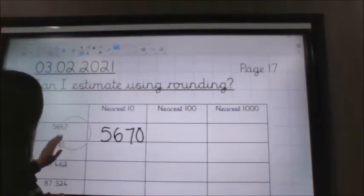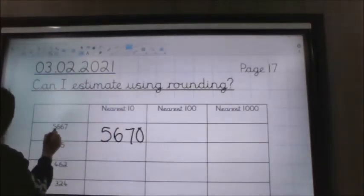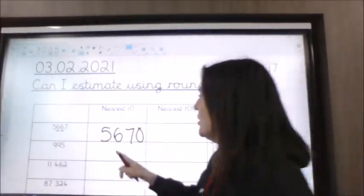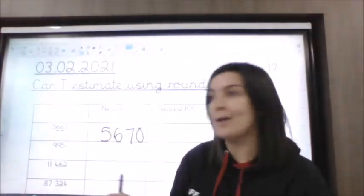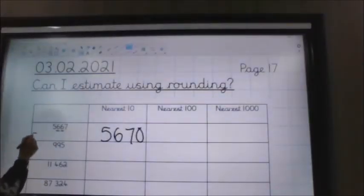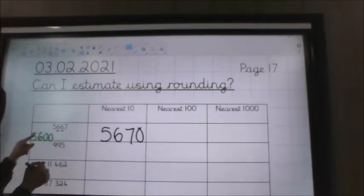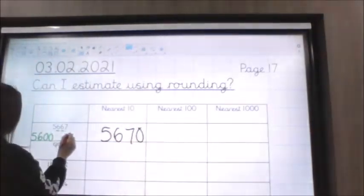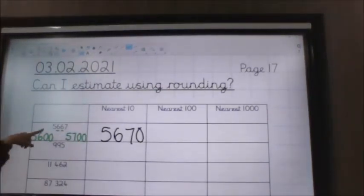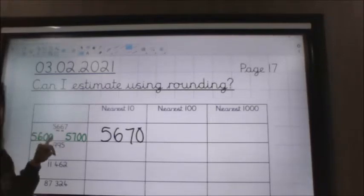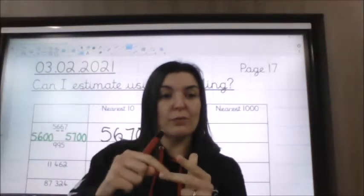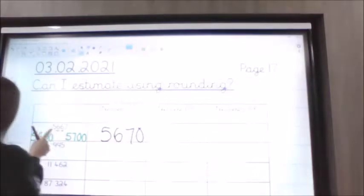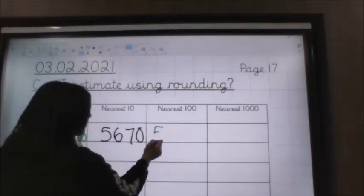The next one is the nearest 100. This time I need to look at the hundreds column and the tens column. First job: which two hundreds is it in between? My first hundred is 5,600 and the next hundred would be 5,700. Then I look at the tens column and there's a six. Remember the rule: 1, 2, 3, 4 we round down; 5, 6, 7, 8 or 9 we round up. So it's a six — I'm going to round up to 5,700.